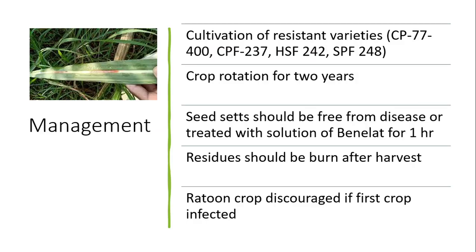For management, cultivation of resistant varieties is recommended. Crop rotation for two years should be practiced. Sets used for planting must be free from disease, or treated with Benlate or other fungicides. Crop residues should be burned after harvest, and the ratoon crop should be discouraged after a first crop becomes infected.